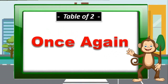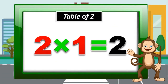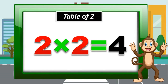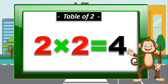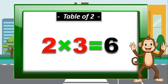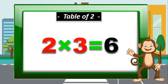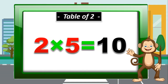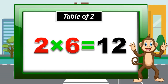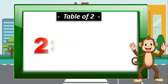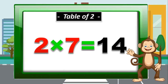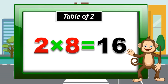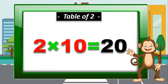Repeat again with me. 2 times 1 is 2. 2 times 2 is 4. 2 times 3 is 6. 2 times 4 is 8. 2 times 5 is 10. 2 times 6 is 12. 2 times 7 is 14. 2 times 8 is 16. 2 times 9 is 18. 2 times 10 is 20.